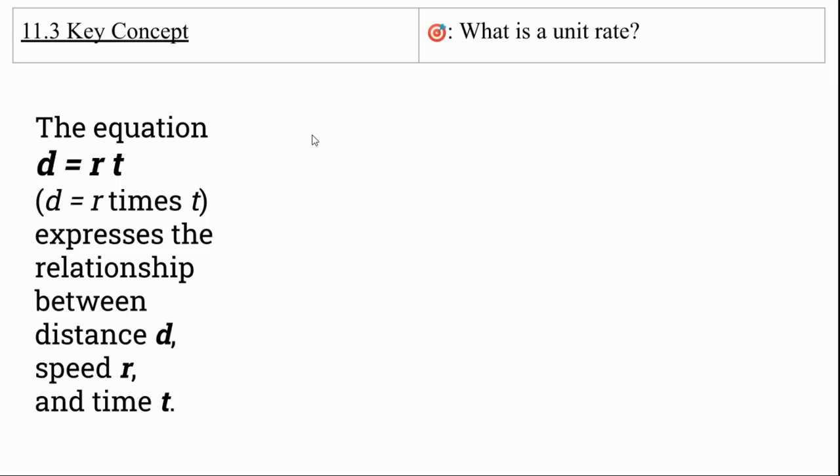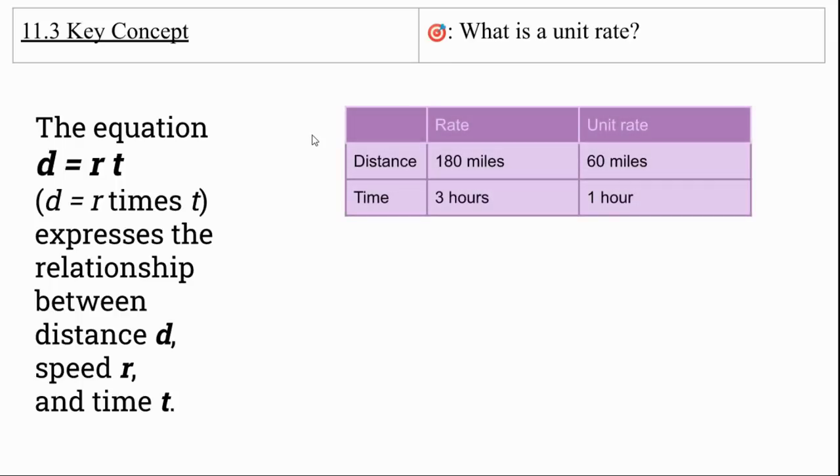So here's our key concept. And this is an equation. We haven't really studied this much this year. And it can be kind of confusing at times. The equation is D equals RT or D is R times T. We express the relationship between distance, speed, and time.